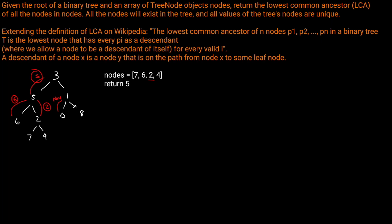We go to the right: is 8 in nodes? No. We go to its left and right — they're null — so we return none. Since we have none from that branch, we can only return none. From node 3, the recursion returns 5, the non-null element received from both left and right. So 5 is our LCA.